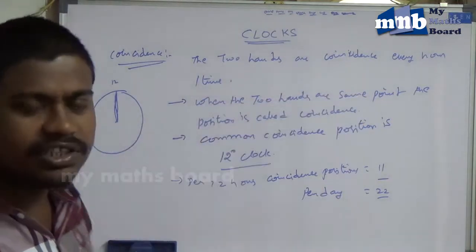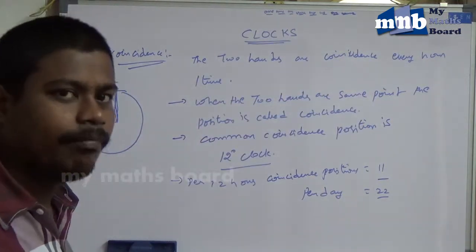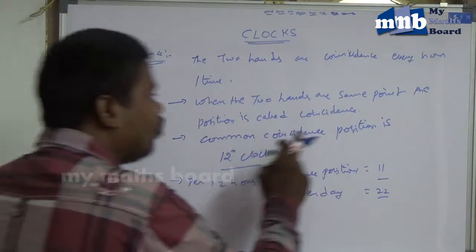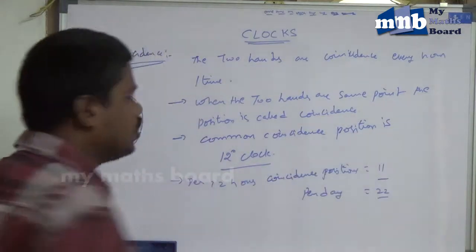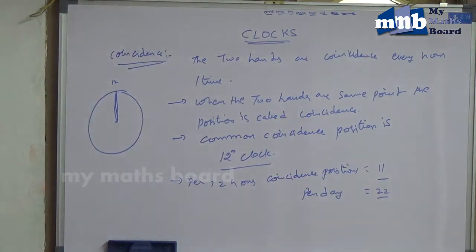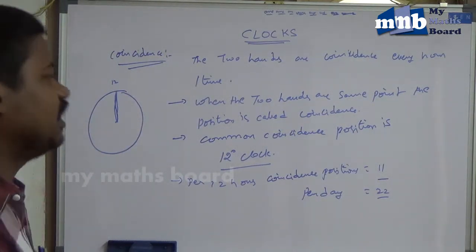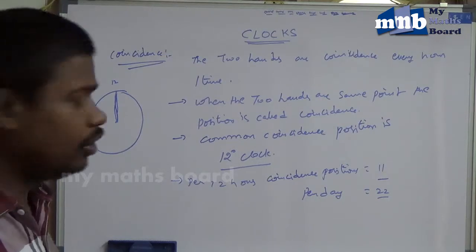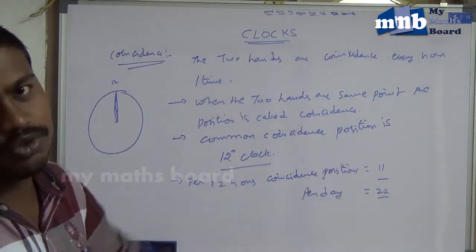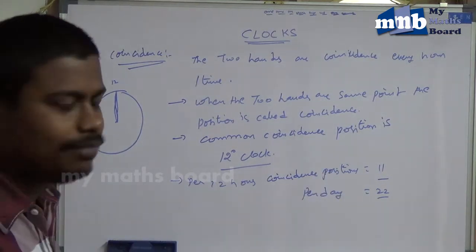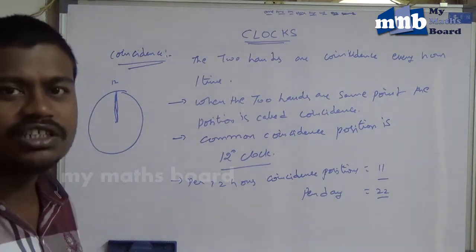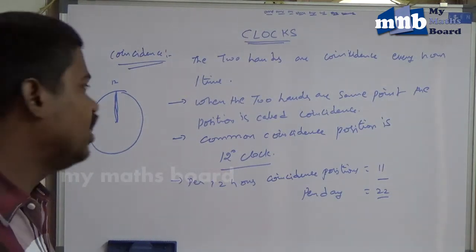When the two hands are in coincidence, it happens every one hour one time. The common Coincidence Position is 12 o'clock — that is not countable. According to our theory, per 12 hours the Coincidence Position occurs 11 times, and per day the Coincidence Positions are 22 times.